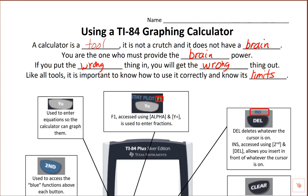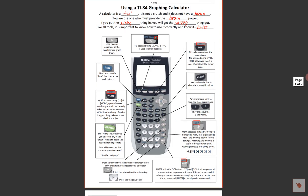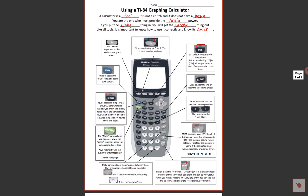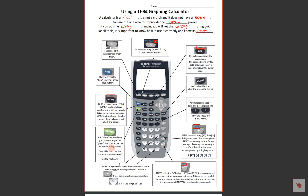Let's look at some common keys on the calculator. Starting with the second key — notice they're color coded; on this one it's blue. The second key accesses all the second function keys — any of those blue functions above each button. There's also the mode button; if you ever find yourself in a screen you can't get out of, second quit (second + mode) will get you back.